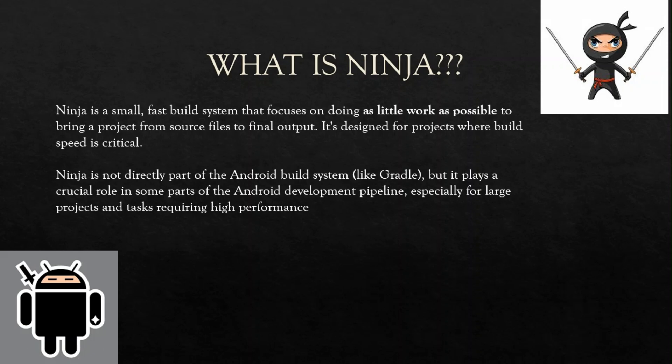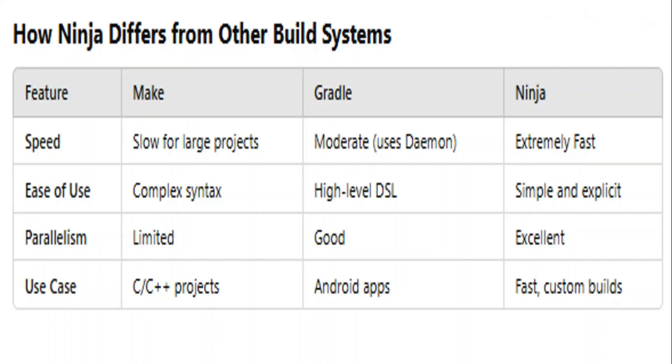Ninja is not directly part of the Android build system like Gradle, but it plays a crucial role in some parts of the Android development pipeline, especially for large projects and tasks requiring higher performance. To keep it simple, just remember: Ninja is a small, very fast build system which helps us generate the output efficiently in Android.